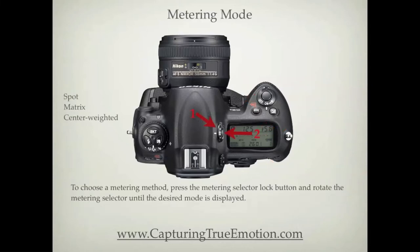To choose a metering method, press the Metering Selector Lock button and rotate the Metering Selector until the desired mode is displayed.